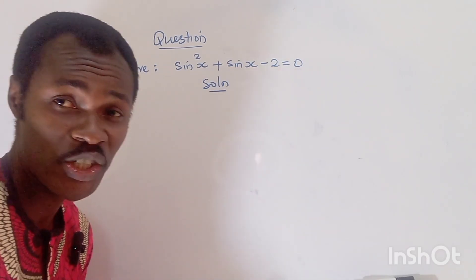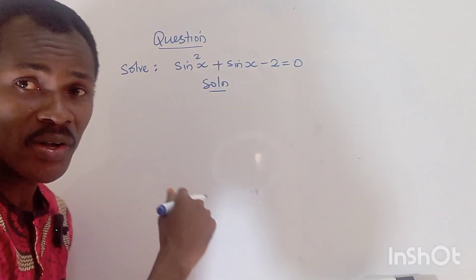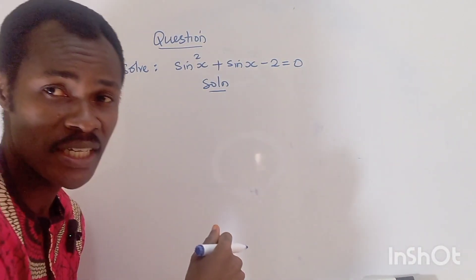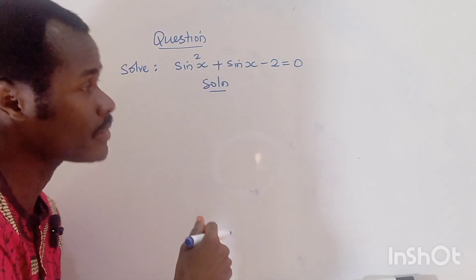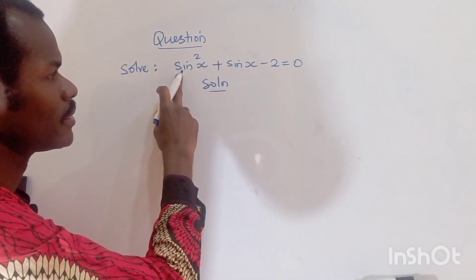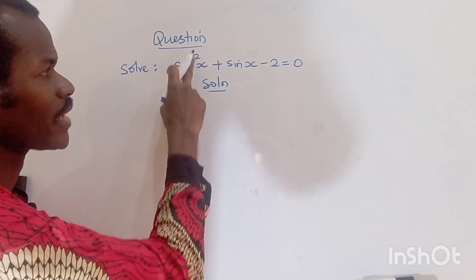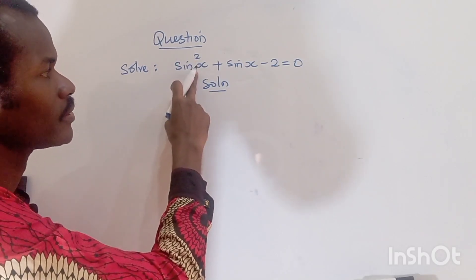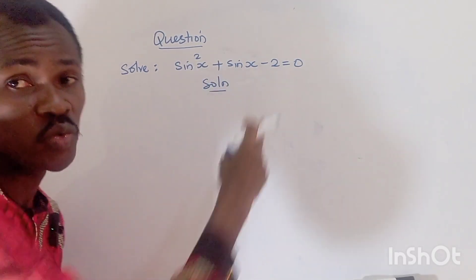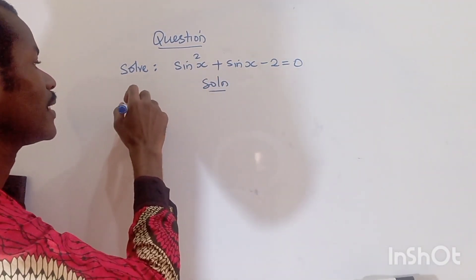It's a bit tricky but we can solve it with some simple ideas. If we look at this, we have sine squared x plus sine x minus two equals zero.